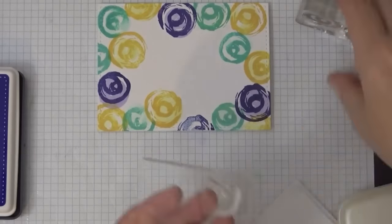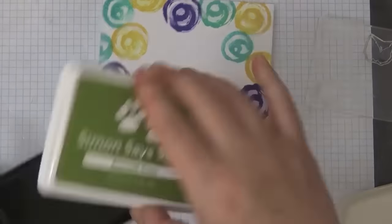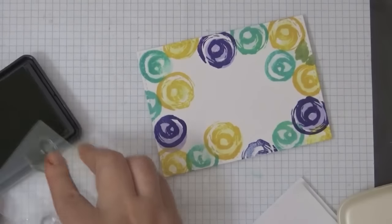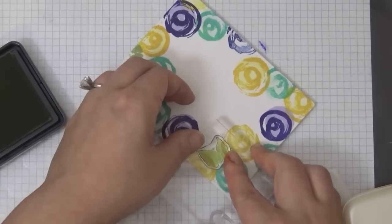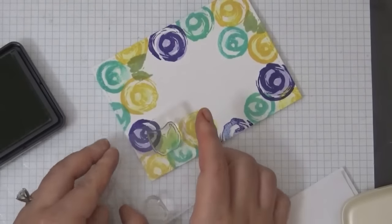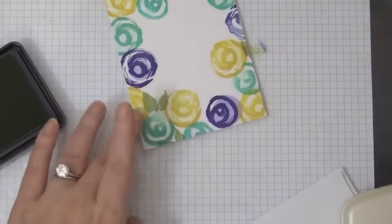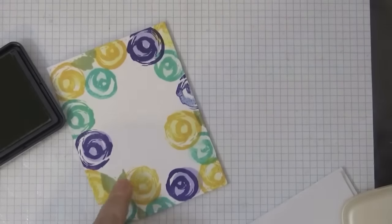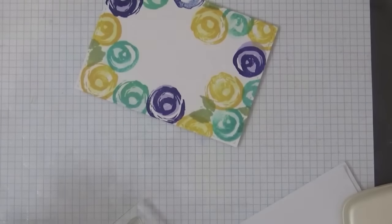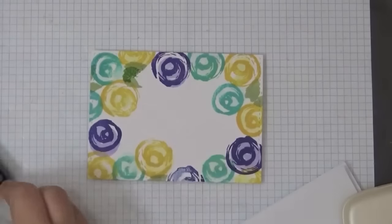Now I grabbed the leaves and I'm randomly just stamping it here and there. Not too much, I don't want to overcrowd this piece. Then I'm going to stamp it again with more of the detail part of the leaf.